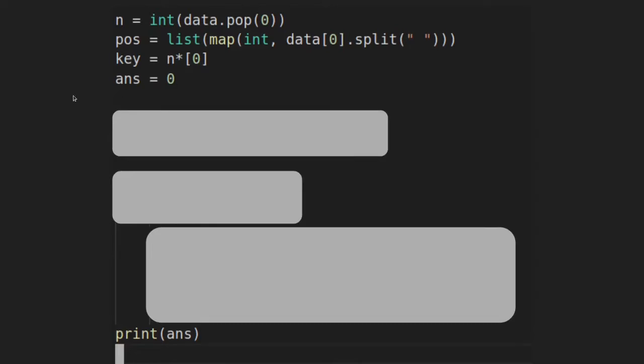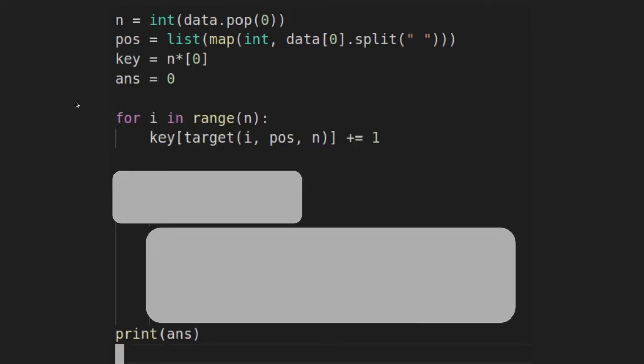So for example, the first slot represents how many cows will pass to the cow in the slot number one. So the first for loop will help us fill out that key array. So we can figure out which cows are getting passed the ball. Specifically, we're interested in which cows are not getting passed the ball, actually.